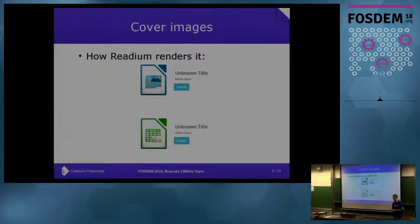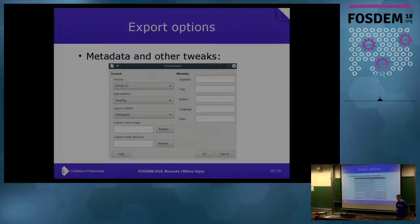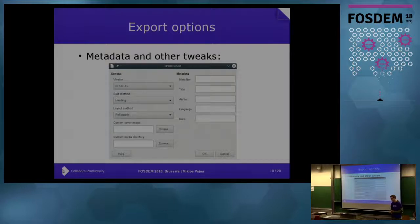Then we come to features where the Writer document itself does not really have a concept, but the EPUB specification does. The first example is cover images. In Writer, you don't really set a cover image on a document — when generating thumbnails, we just paint the first page to a meta file. So as part of the export options, you can specify a cover image. The export options dialog used to be very simple, but as I added more and more features it's now relatively complex. You can set the EPUB version — EPUB 3 and EPUB 2 are the two major versions, and EPUB 3 is what we default to.